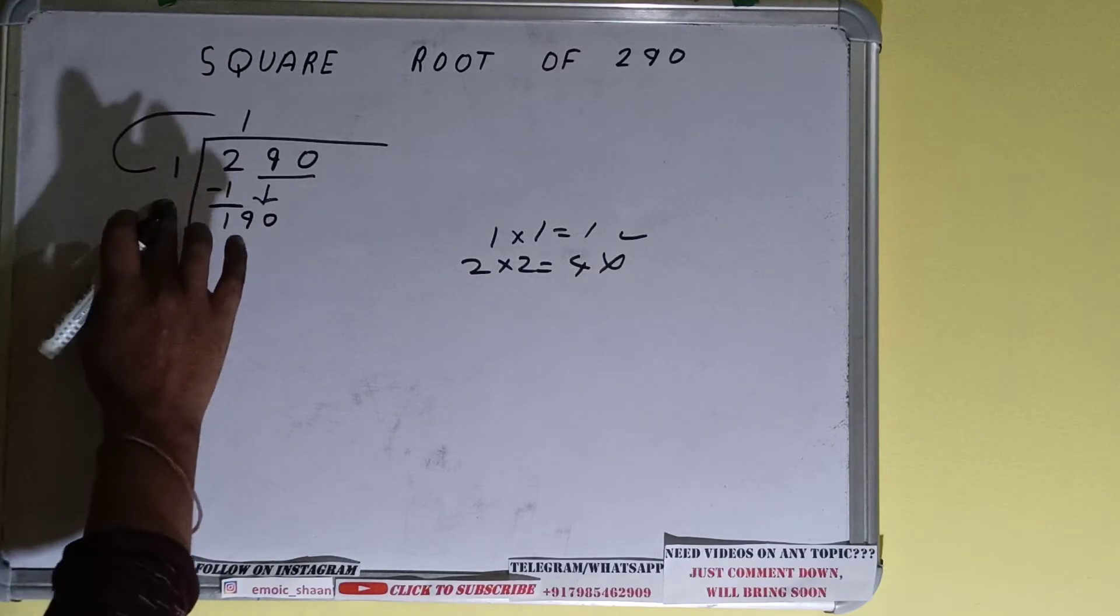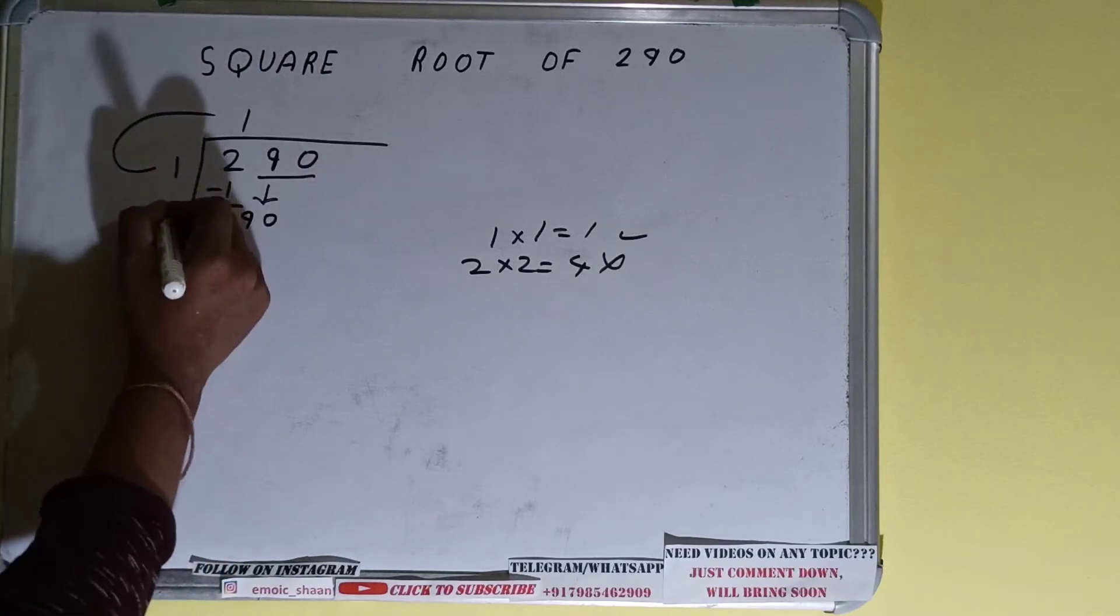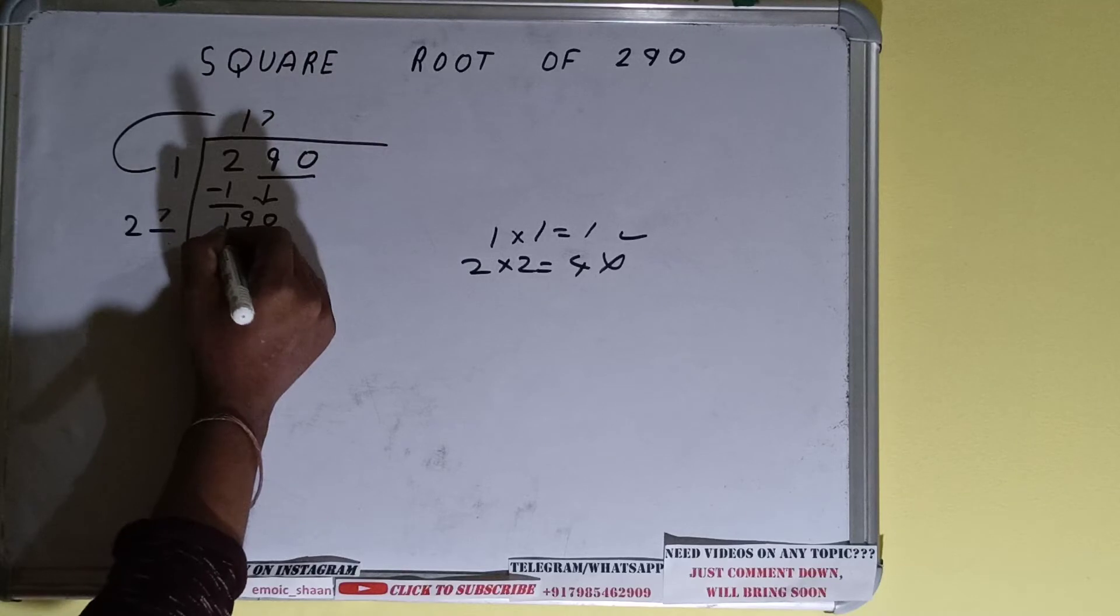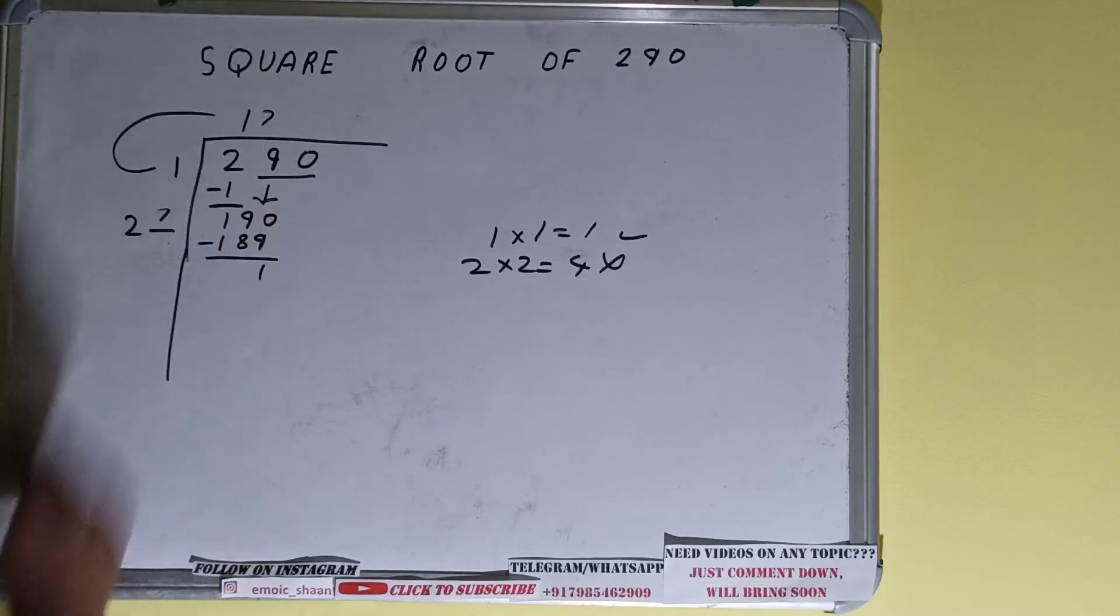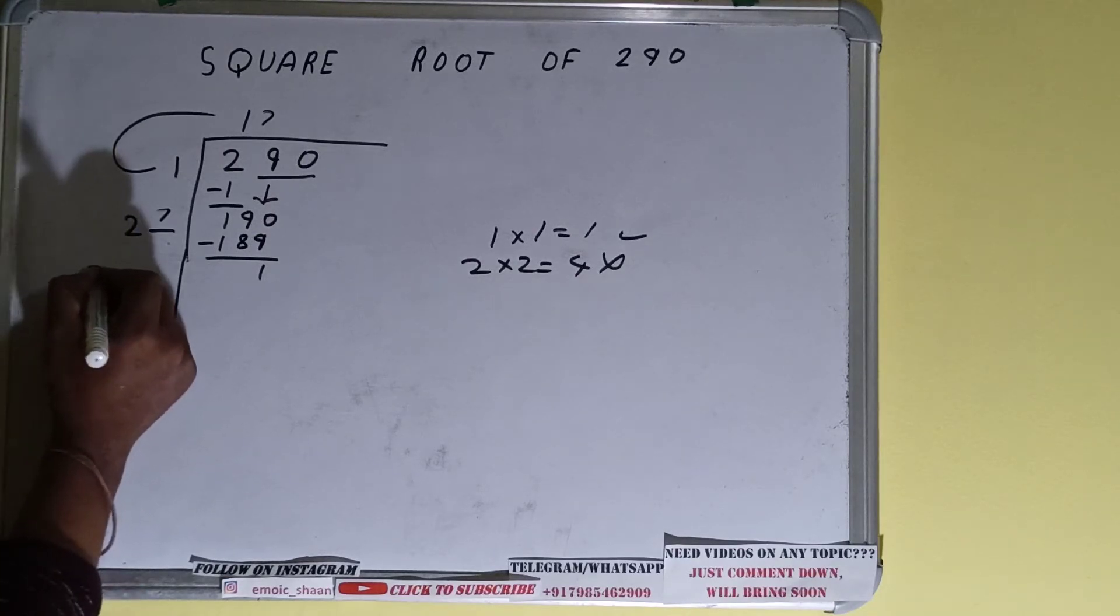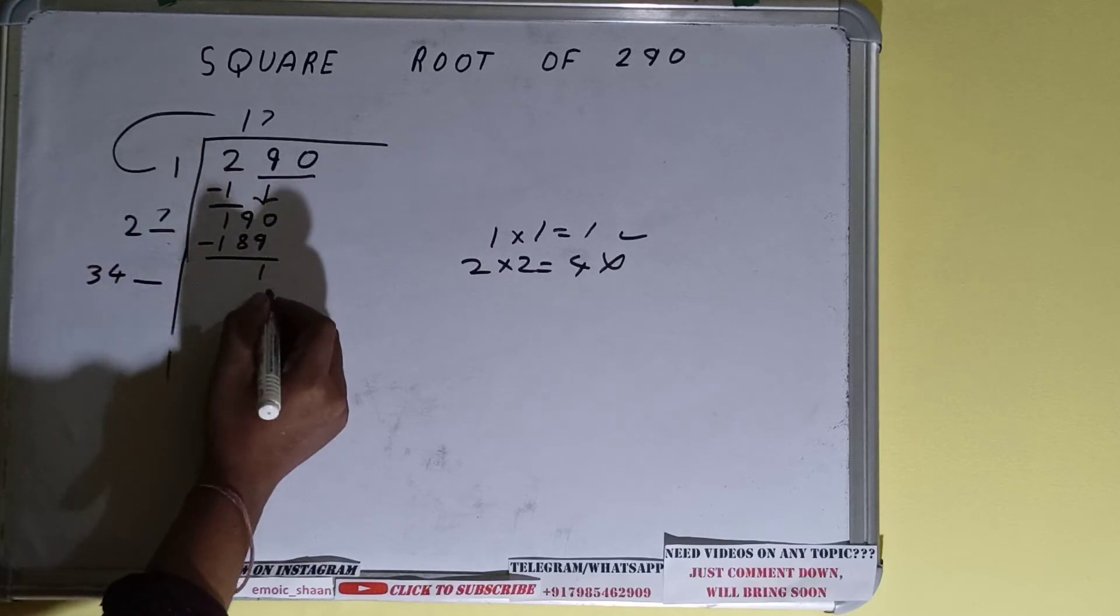Now whatever number we write here we have to write here also. So seven will work. Seven here and seven here will give 189. Subtract it and one will be left. Now 27×7, that is right. So add both. 27 plus 7 will be 34 and keep one digit extra over here.